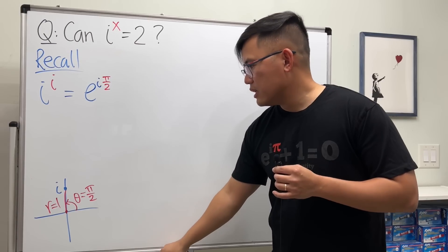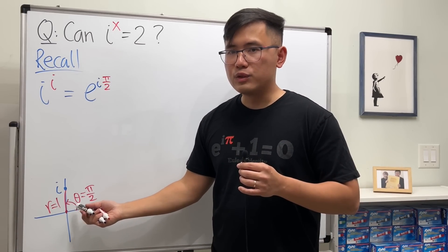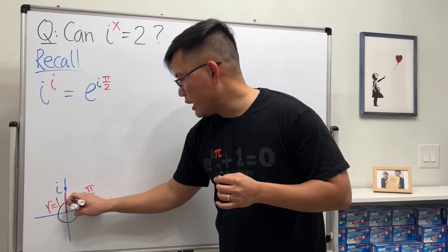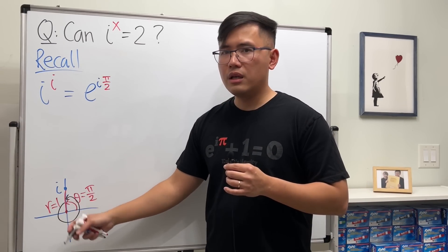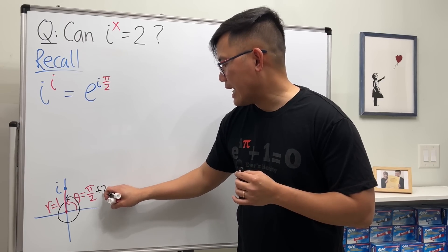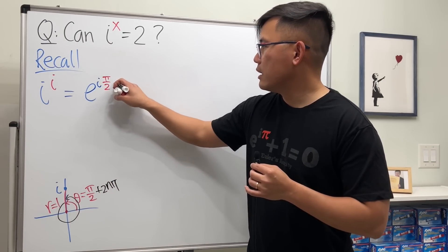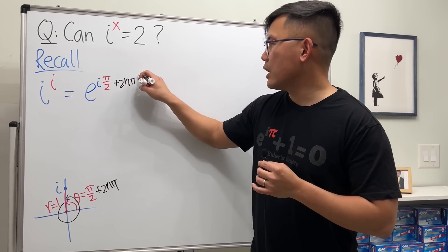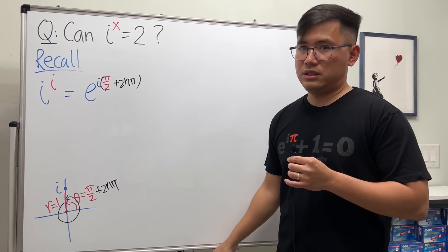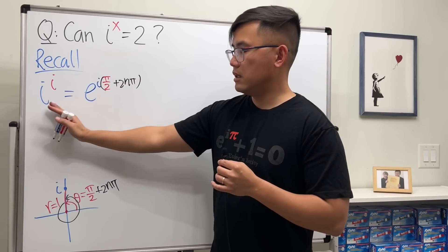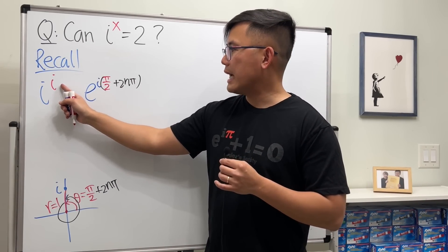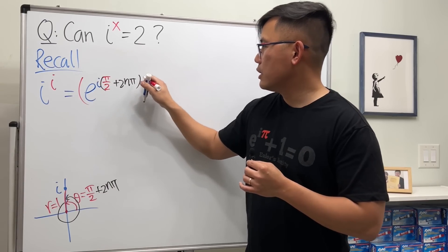But the truth is, this is not the only angle that will make this work, because you can keep rotating this way or the other way. So technically we can add 2πn. This is how we end up with infinitely many answers, and then raise the whole thing to this i's power.